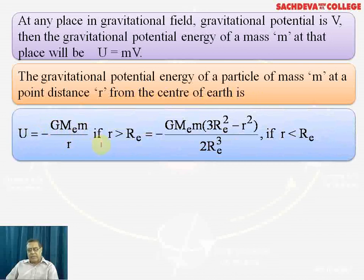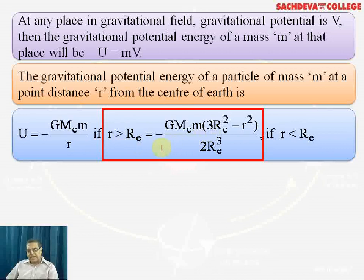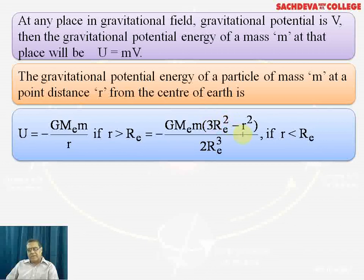This represents the system of the Earth's mass and a body placed at distance r from the center. If small r is greater than R_e (Earth's radius), the formula remains U = -GM·m/r. If r is less than R_e (inside the Earth), the formula changes to U = -GM·m × (3R_e² - r²) / (2R_e³).